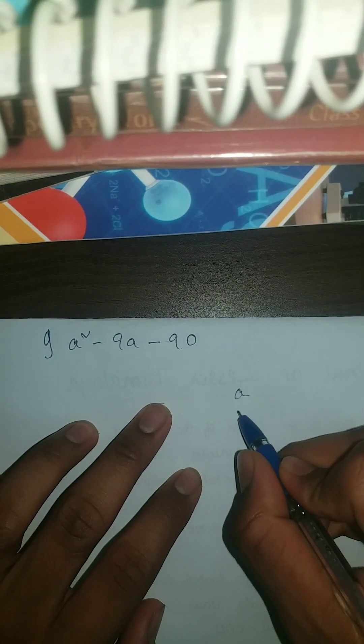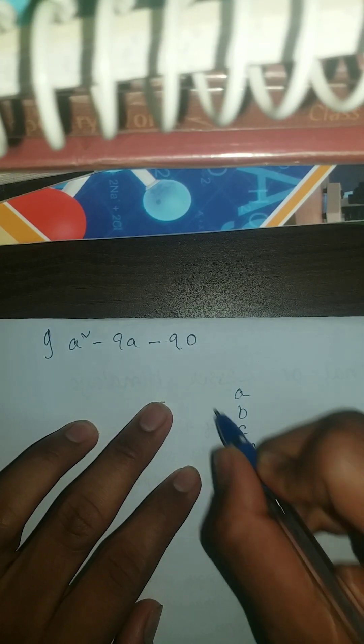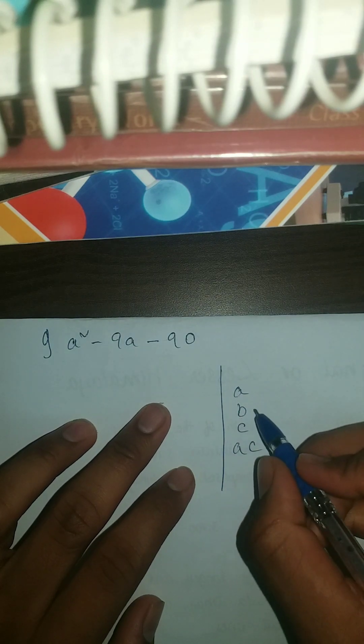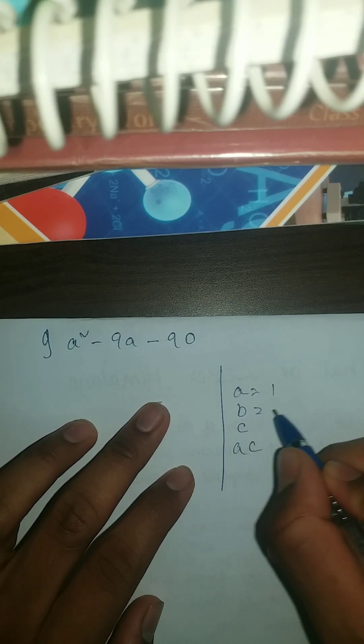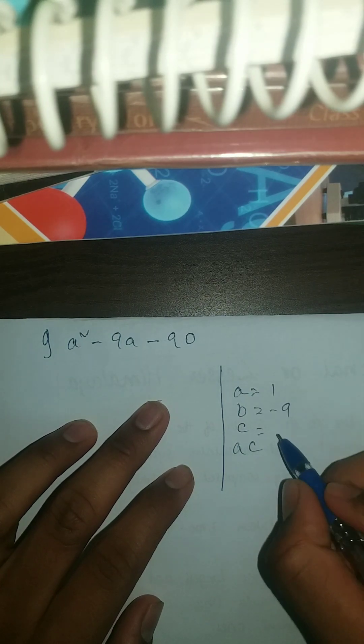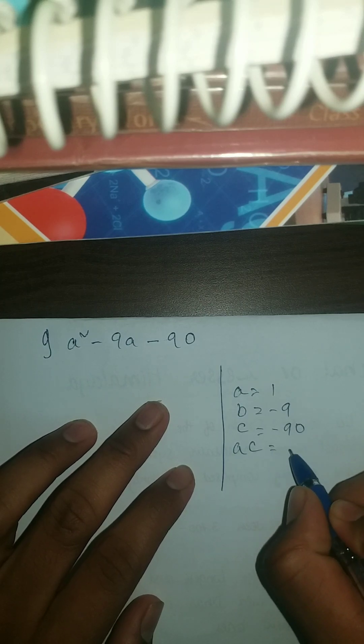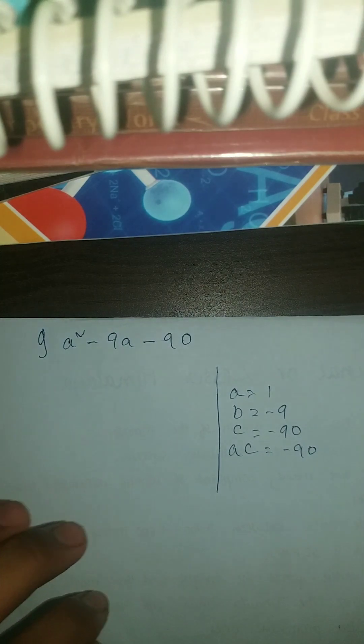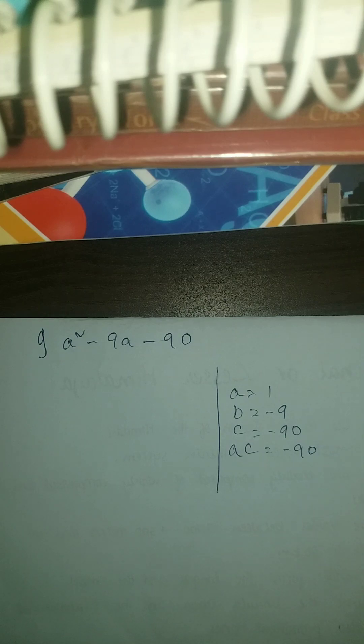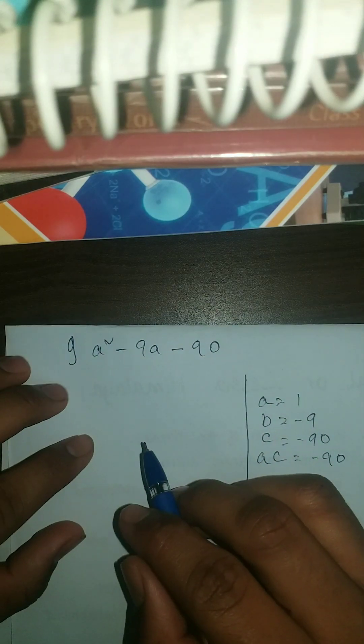So here what we're gonna do, as usual we do a, b, c, ac. I would recommend make a column. Here a is your 1, b is your minus 9, c is your minus 90, and ac is your minus 90. I would also recommend you can do in a rough also or you can do in a practical paper, that doesn't matter.